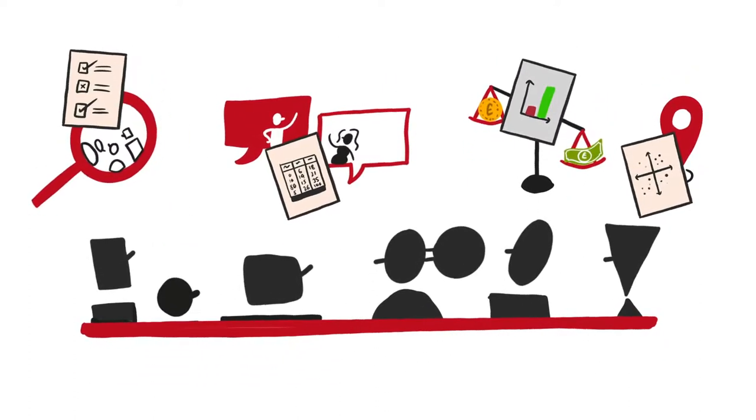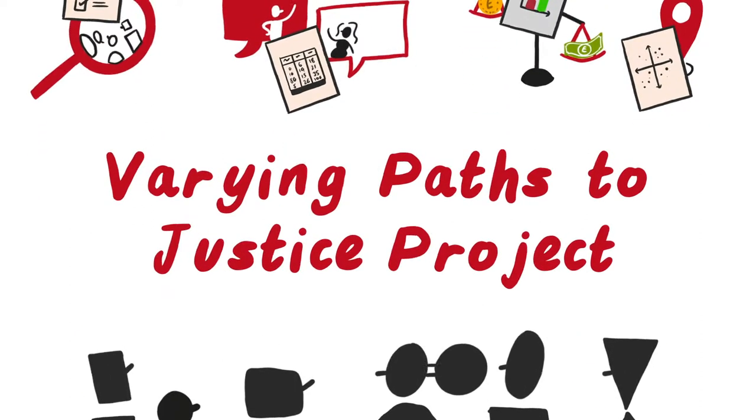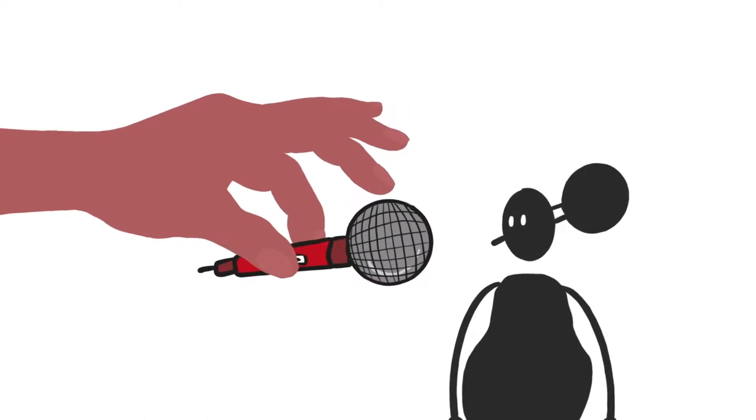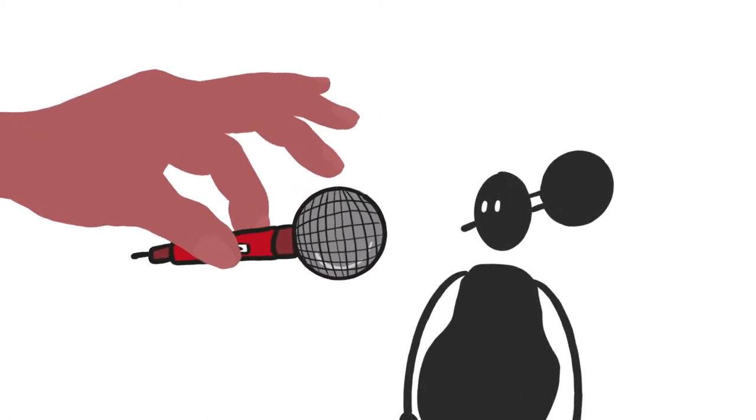One example is the Varying Paths to Justice project. This involved in-depth interviews with people experiencing justice problems to understand how they behaved.